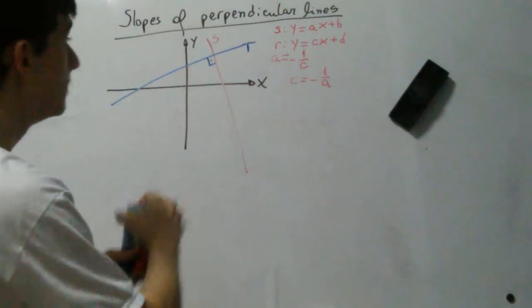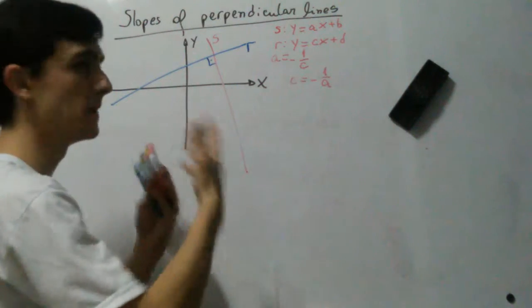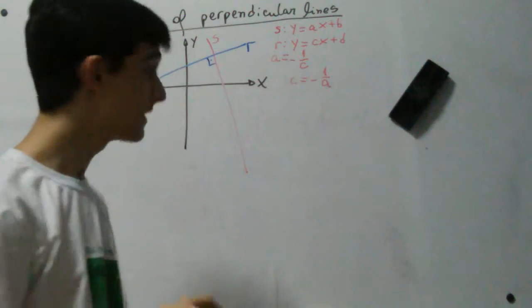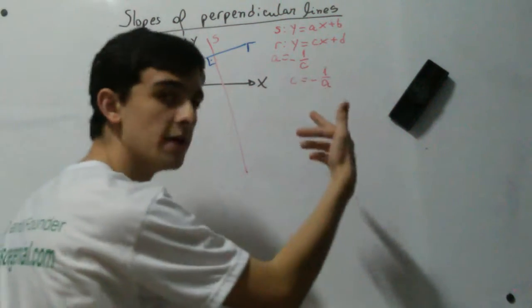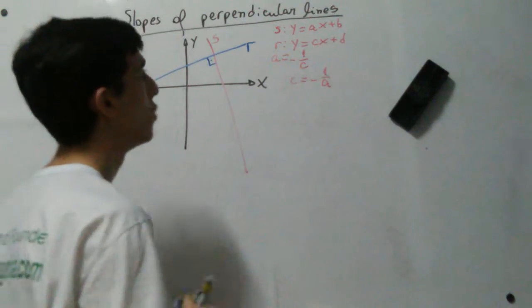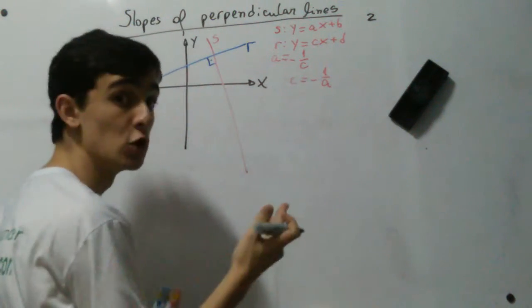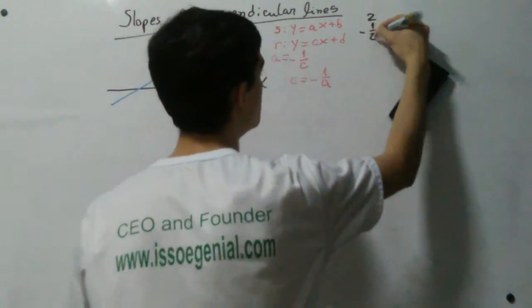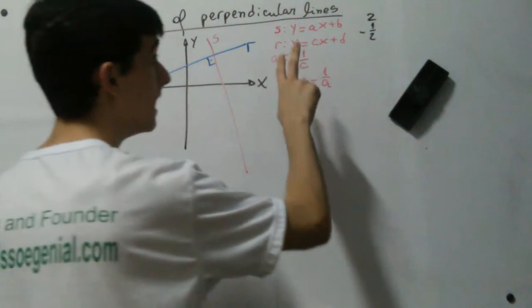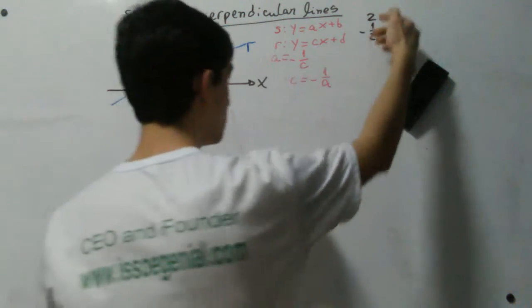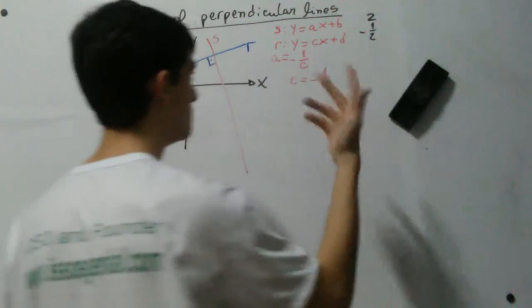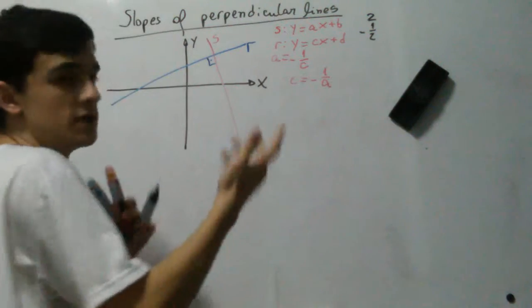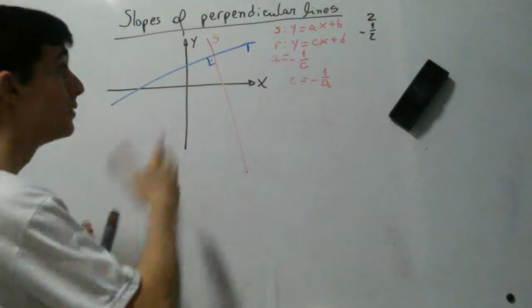The relation says the slopes of perpendicular lines are opposite reciprocals, which means you flip over the number and flip the sign. For example, if one of the slopes is 2, the slope of a line perpendicular to the first one is going to be negative 1 over 2. You raise the number to the power of negative 1, then multiply by negative 1, which just flips the sign.